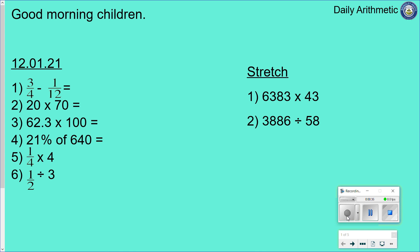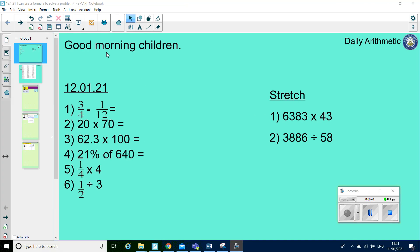OK, for question 1, before we could solve question 1, we had to make the denominators the same. So, 3 quarters, we had to convert the denominators to be 12ths, so we had to ask ourselves, what do we times 4 by to get 12? We times it by 3, so we had to do the same on the top. So, we ended up with 9 12ths, take away 1 12th, so our answer for number 1 was 8 12ths.